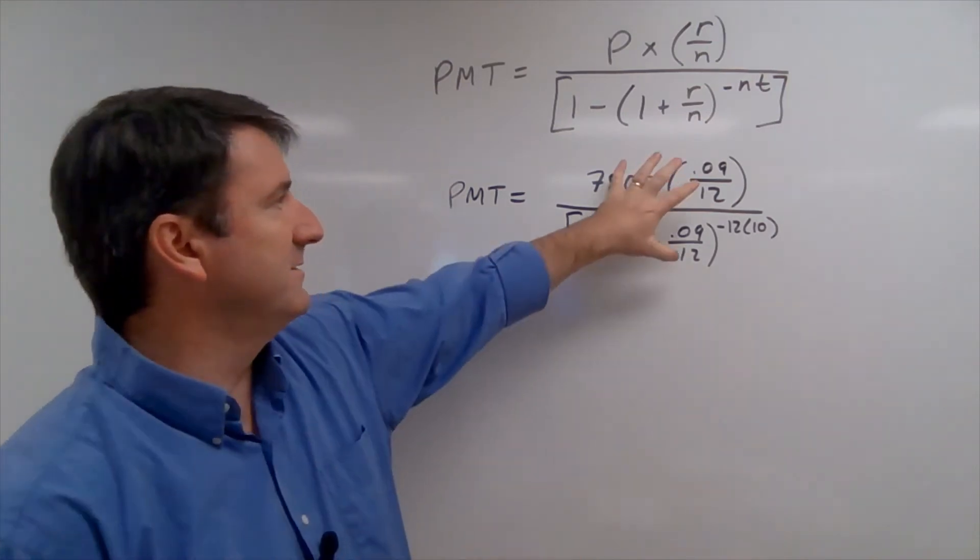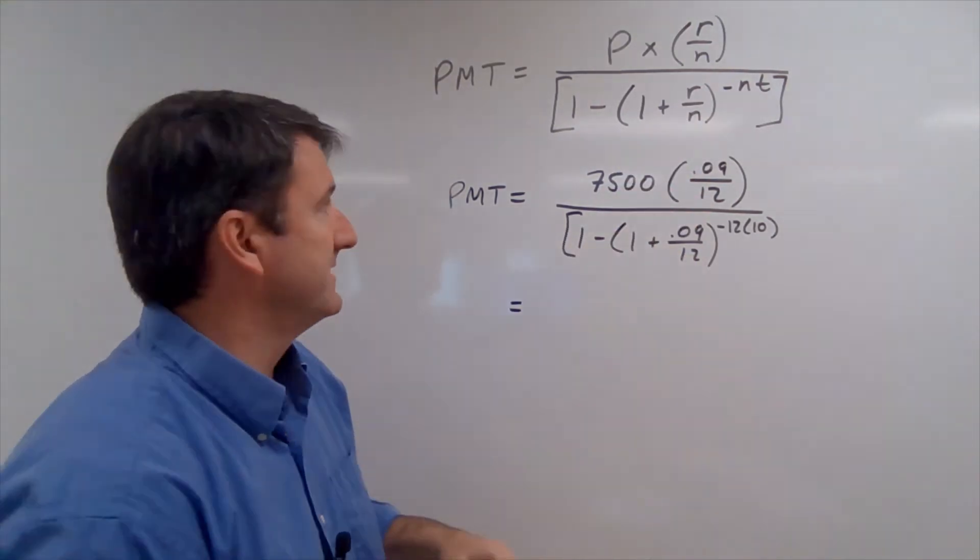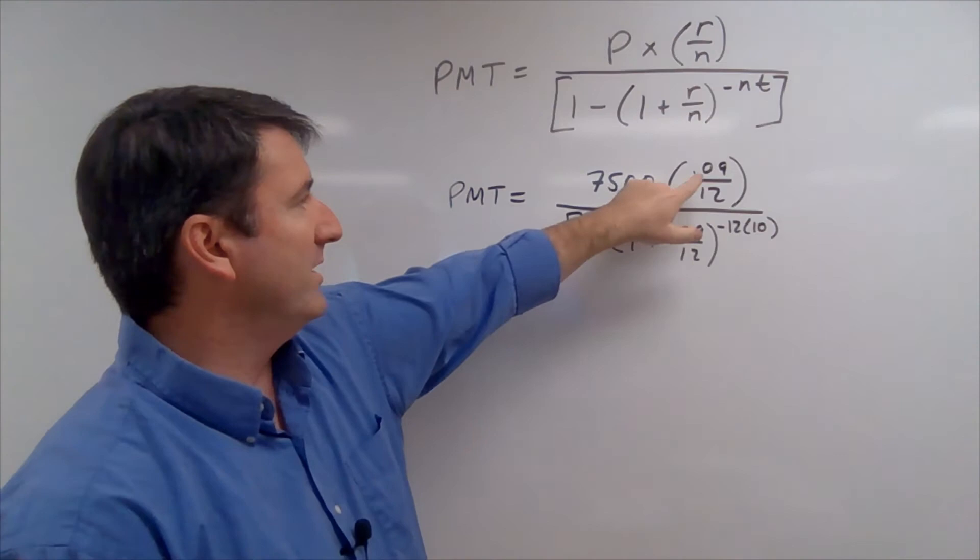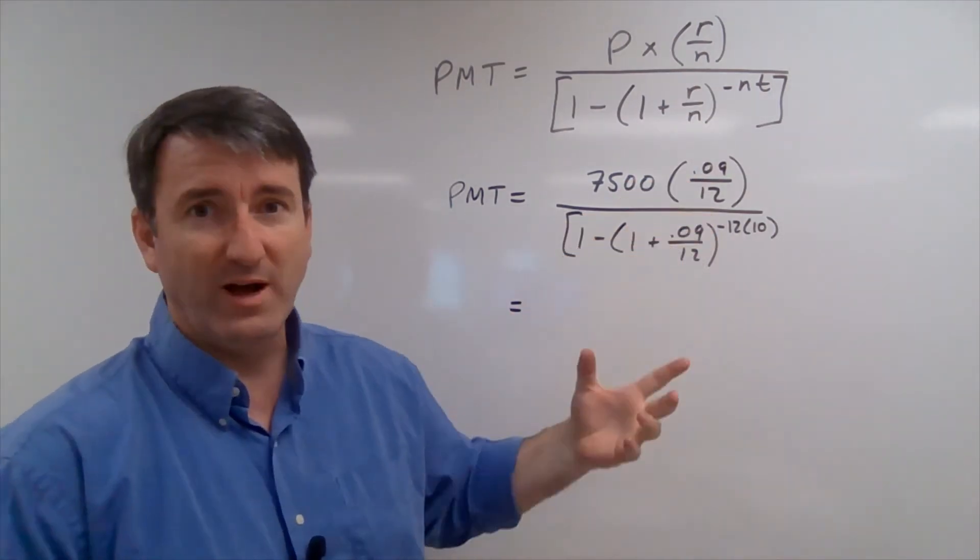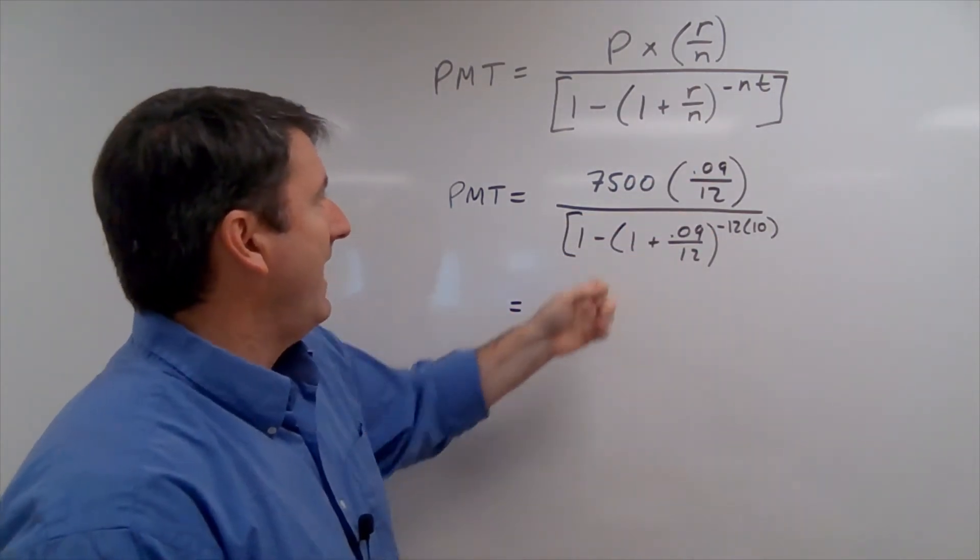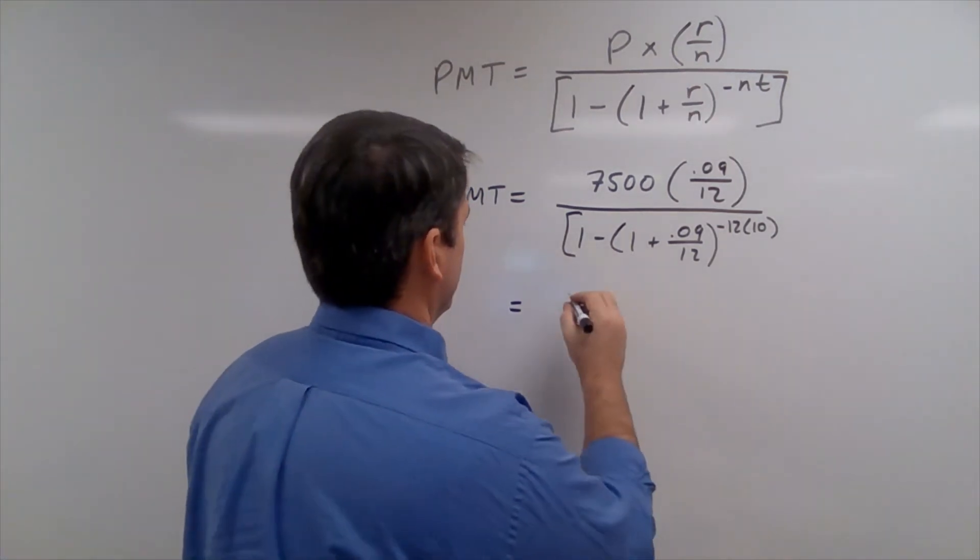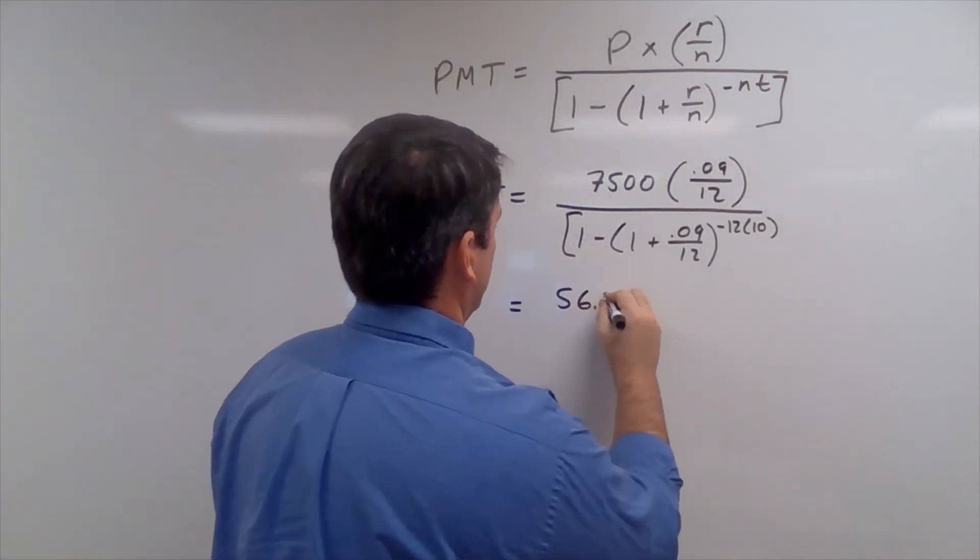Alright, if we plug that into the calculator, let's leave the numerator and the denominator separately. The numerator, 0.09 divided by 12, is 0.0075. And multiply that by 7500, we're going to get 56.25.